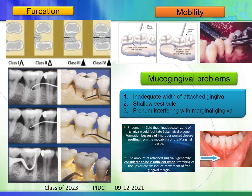Tooth mobility is checked with gloved fingers or backs of instruments and graded 1, 2, and 3 according to Glickman. For muco-gingival problems, three issues are addressed: inadequate width of attached gingiva, shallow vestibule, and frenum interference. Friedman stated that inadequate width of attached gingiva prevents proper subgingival plaque removal due to movability of the marginal tissue. Attached gingiva is considered insufficient when stretching of lips or cheeks induces movement of the free gingival margin.